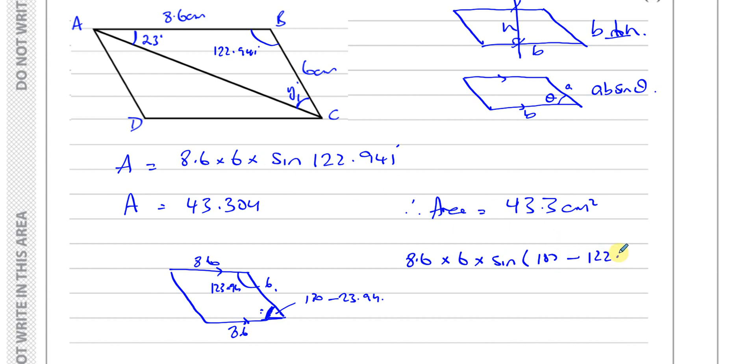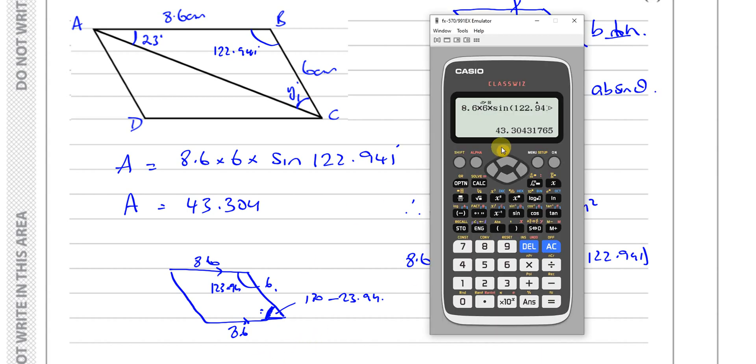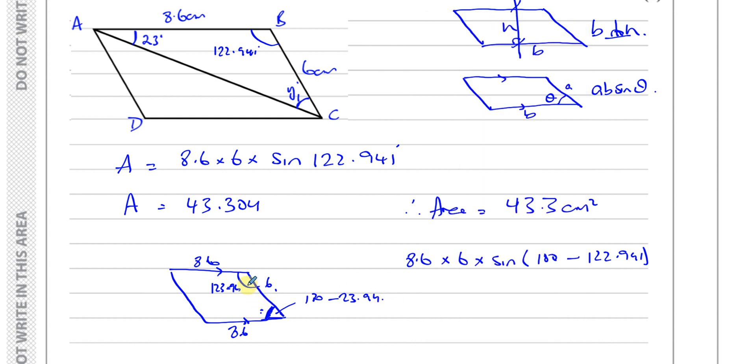They share the same sine ratio. So if I did 8.6 times 6 times the sine of 180 minus the angle, it's like the angle that's interior with this angle, you'll see you're going to get exactly the same answer. If I just rewrote this, and instead of finding the sine of this angle, I found the sine of 180 minus the angle, you'll see you'll get exactly the same answer. So it doesn't matter whether you use this angle or that angle, you still get the same area. Because the sine of this angle and the sine of that angle are the same, because they are interior angles, they are supplementary angles, they add up to 180. The sine of 30 is equal to the sine of 150, the sine of 60 is equal to the sine of 120, so on. The sine of an angle is equal to the sine of 180 minus the angle, always.